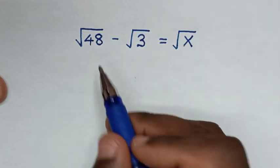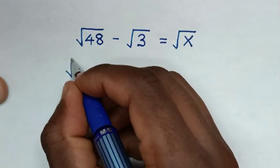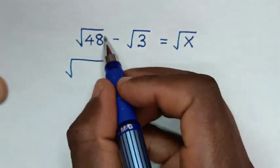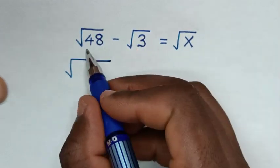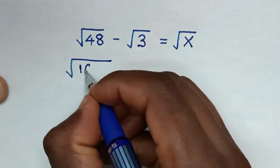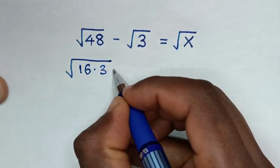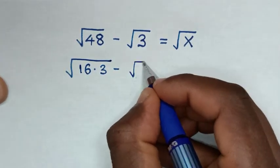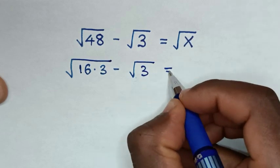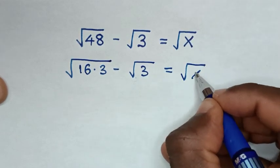So, square root of 48 is the same as square root of 16 times 3. Then minus square root of 3 equals square root of x.